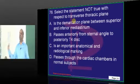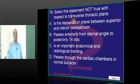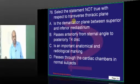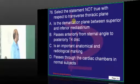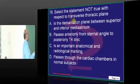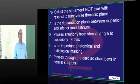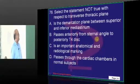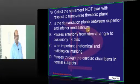The transverse thoracic plane is between the superior mediastinum and middle mediastinum. What is it an important landmark of? What is not true about it? It is a demarcation between superior and inferior mediastinum — that is true.